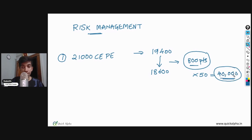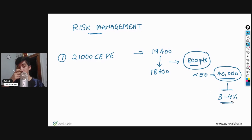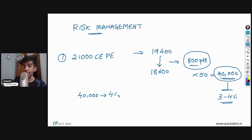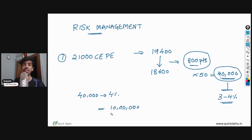Once you determine that maximum risk is around 40,000–50,000 rupees, size your position so this amount doesn't exceed 3–4% of your capital. If 40,000 rupees is 4% of capital, then total capital required for one lot is 10 lakh rupees. So for every 10 lakh rupees, you can create one lot of long-term short straddle — two lots for 20 lakh, five lots for 50 lakh.